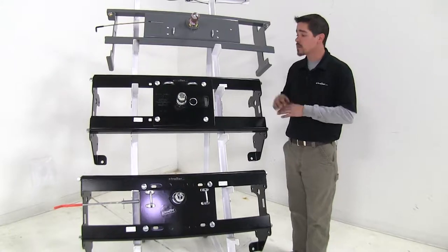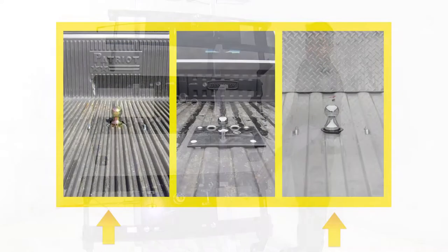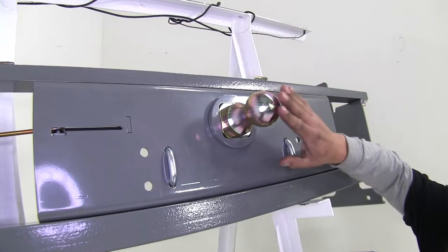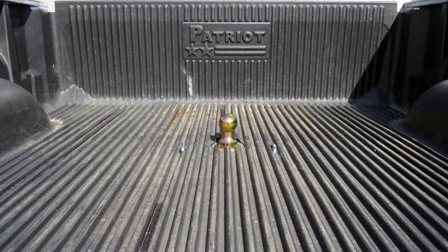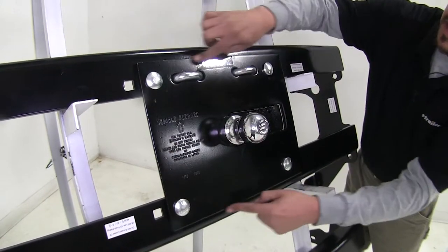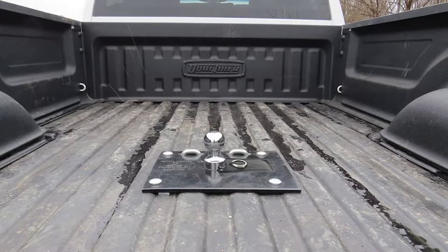Now one of the main differences between all our hitches here is our B&W and our Draw Tight Hide a Goose are both going to install and have the same end result being under the bed, whereas our Draw Tight Fold Down is going to be above our bed. Now both underbed kits, all we're going to see in our bed is the ball and our safety chain loops sticking out. Now the Draw Tight Fold Down is going to be a little bit different. We're going to have this plate sticking out and it's going to be sitting in our bed. Now the only thing really protruding out is going to be the ball, but we are going to have this plate exposed.